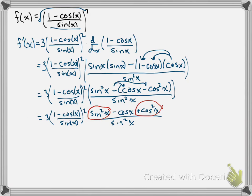So, when I rewrite this in my next line, I've got three times one minus cosine x over sine x, that whole thing squared.